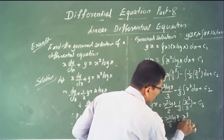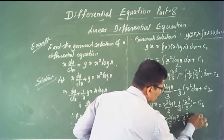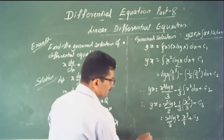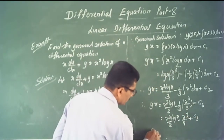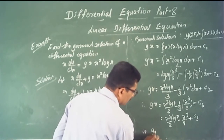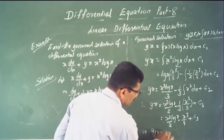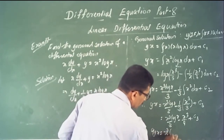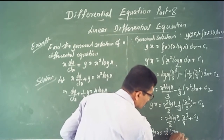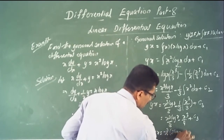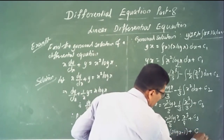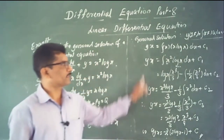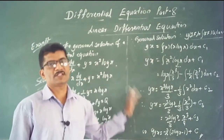Multiplying by 9: 9y·x = x³·log x − x³/3 + C, or 9xy = x³(log x − 1/3) + C. This is the general solution of the given differential equation.